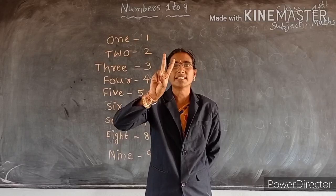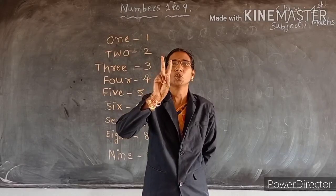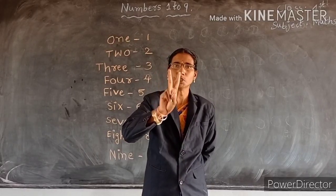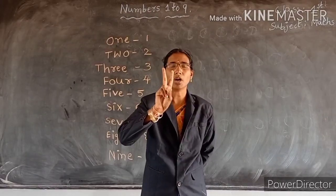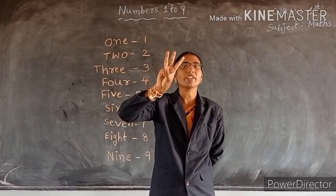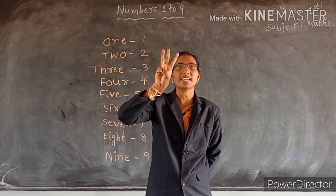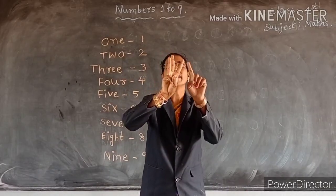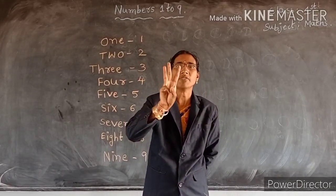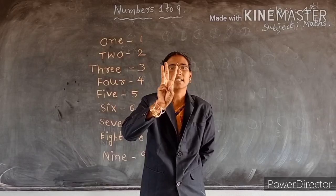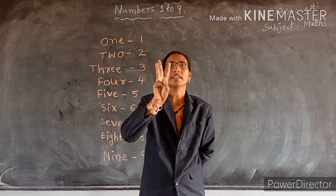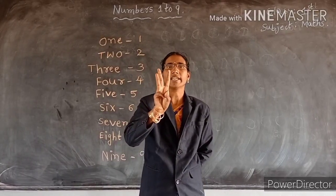How many fingers are there? Two. T, W, O. Two. Tell me, children. How many fingers are there? Count. One, two, three. Three fingers. T, H, R, E, E. Three.